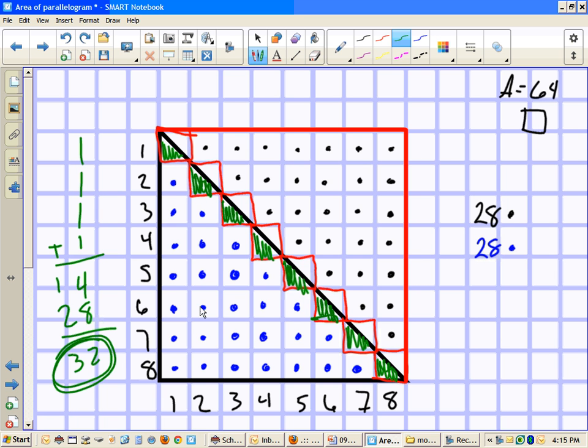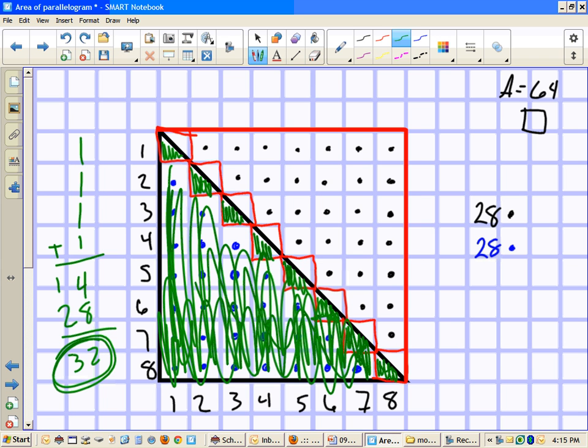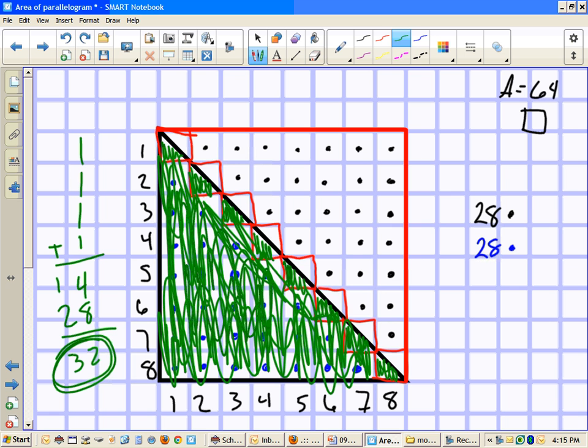So we know that there are 32 whole, oh, see I failed kindergarten there, colored outside the lines, whole dots here, or not whole dots, whole boxes, alright, so everything green, there's 32 of them in there, we figured out the area of the square was 64, and by my calculations, I know that 32 is half of 64, so what does that mean?